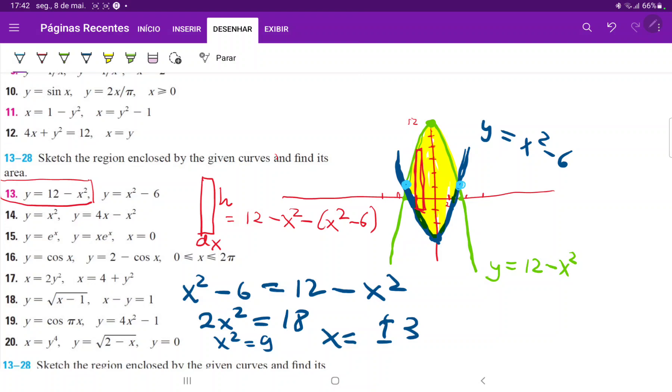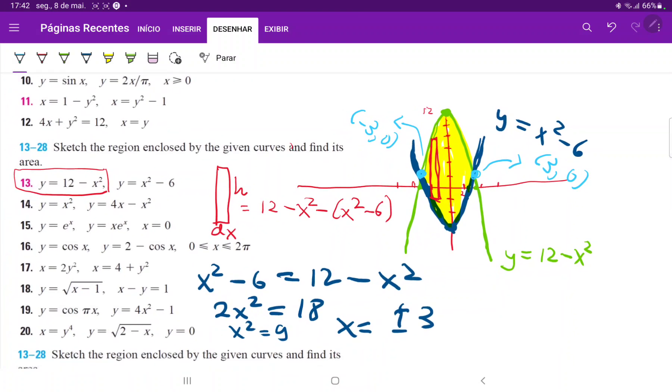So this first point over here, this is minus 3, 0. And then the second point over here, this is 3, 0. All right. So we're ready to set up our integral. And let me just erase the rest of this stuff so that we have space to work.